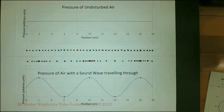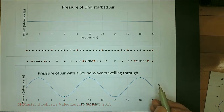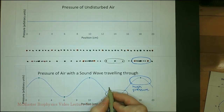Sound waves are longitudinal pressure waves — areas of compressed and expanded air. The top graph shows the pressure of undisturbed air over position; the pressure is constant across the area. The first row of dots represents the spacing of the air molecules in the undisturbed section — they are equally spaced. The bottom graph shows the pressure of air when a sound wave travels through it, over the same area. The pressure changes in a sinusoidal wave over the area. The second row of dots represents the spacing of the air molecules in the second graph. Areas of compression have dots that are closer together and high pressure; areas of expansion have dots that are far apart and low pressure.